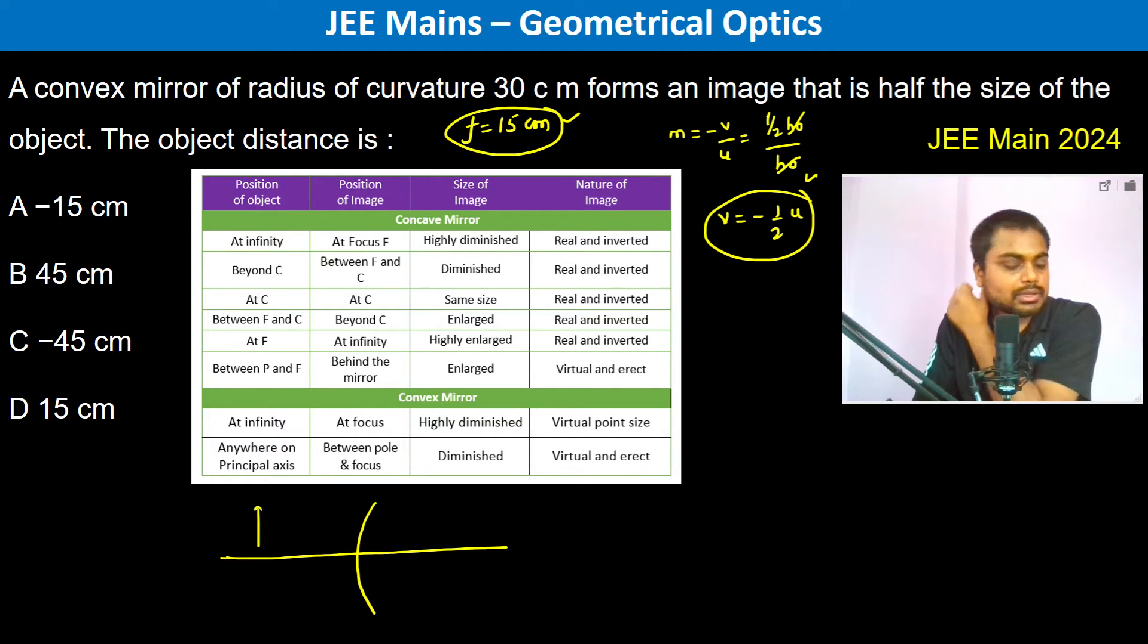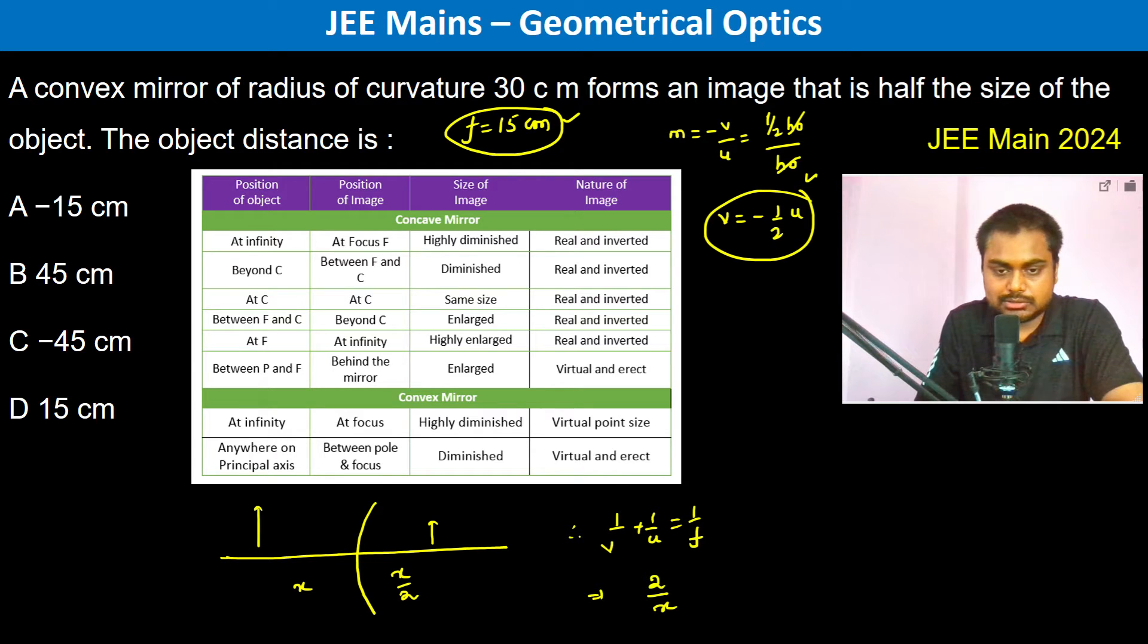Therefore we have 1 by V plus 1 by U is equal to 1 by F. So therefore 1 by V is 2 by X and U is going to be minus 1 by X because of the sign convention.